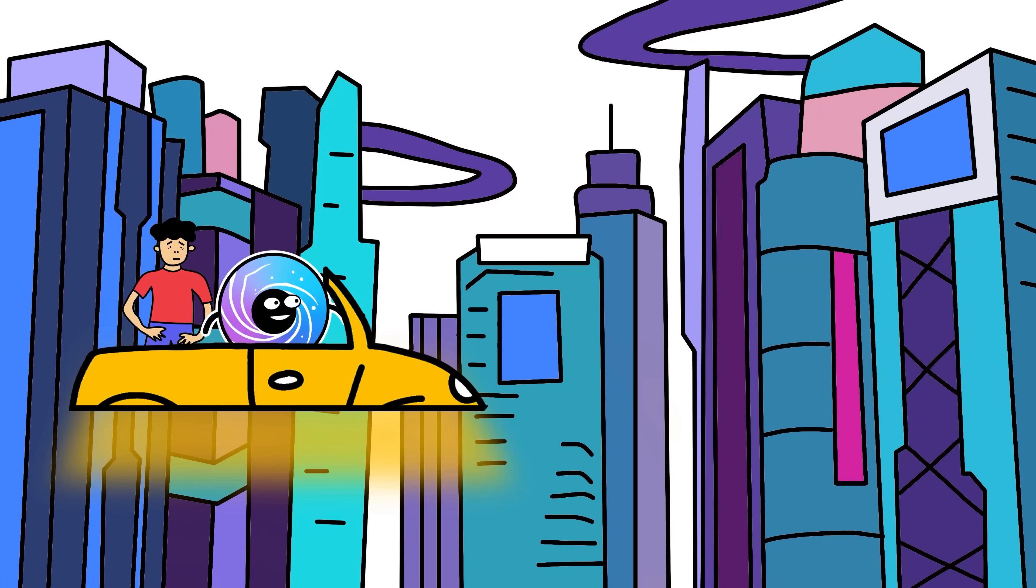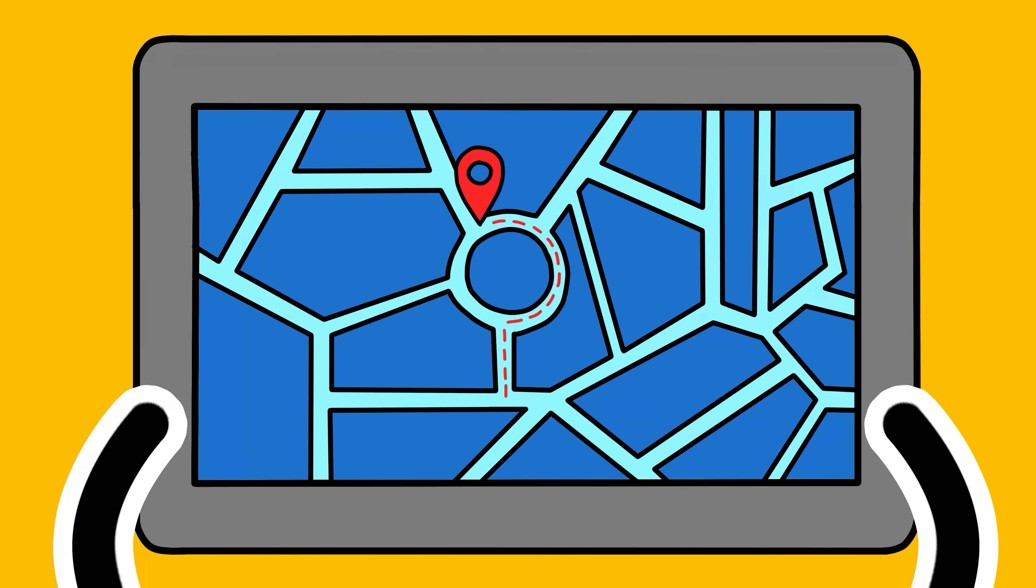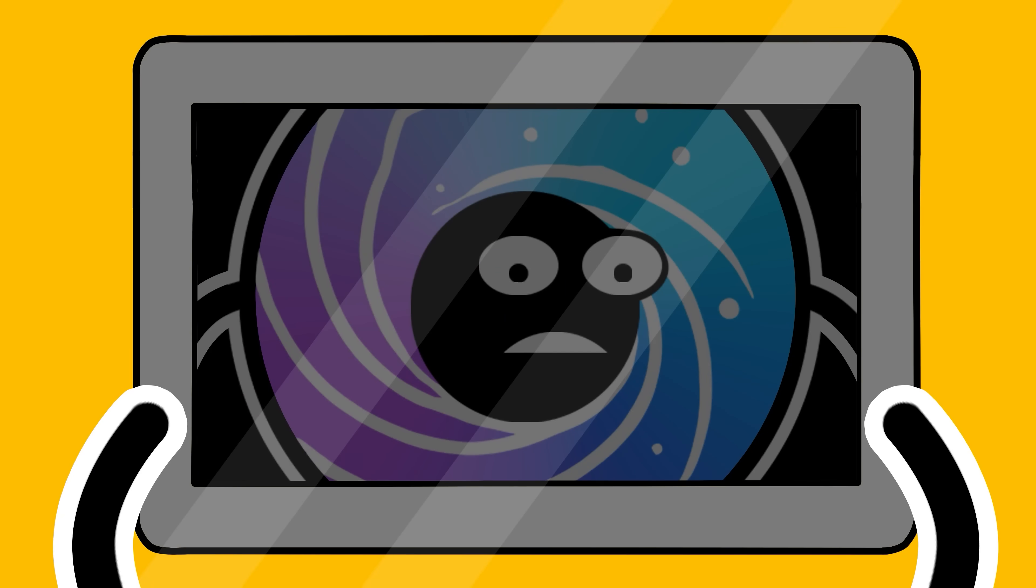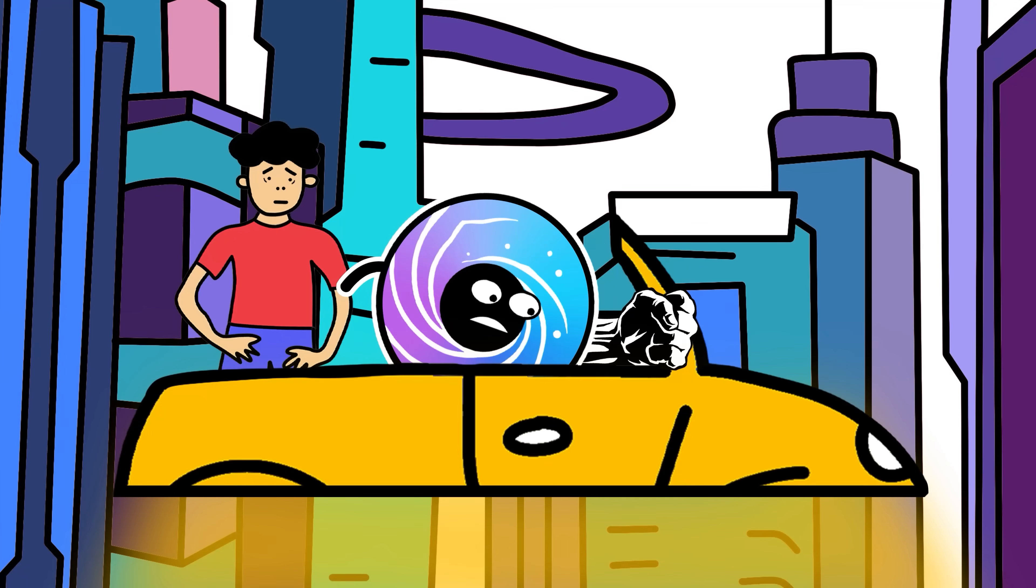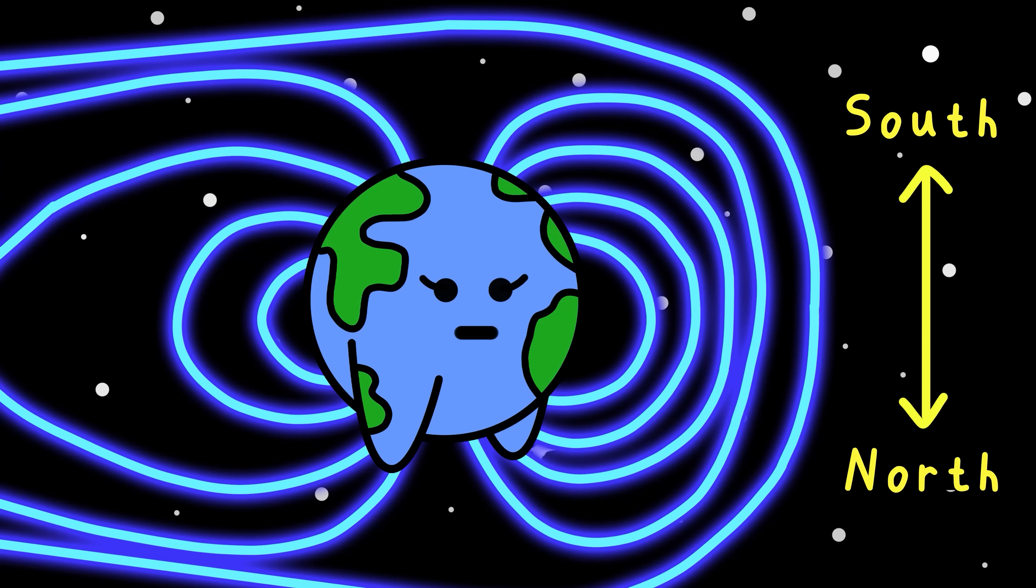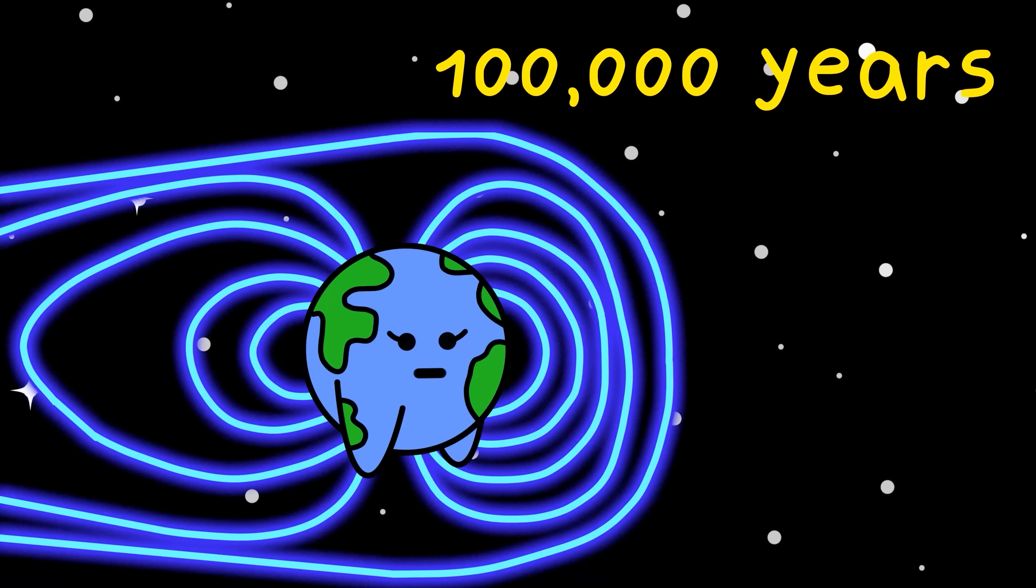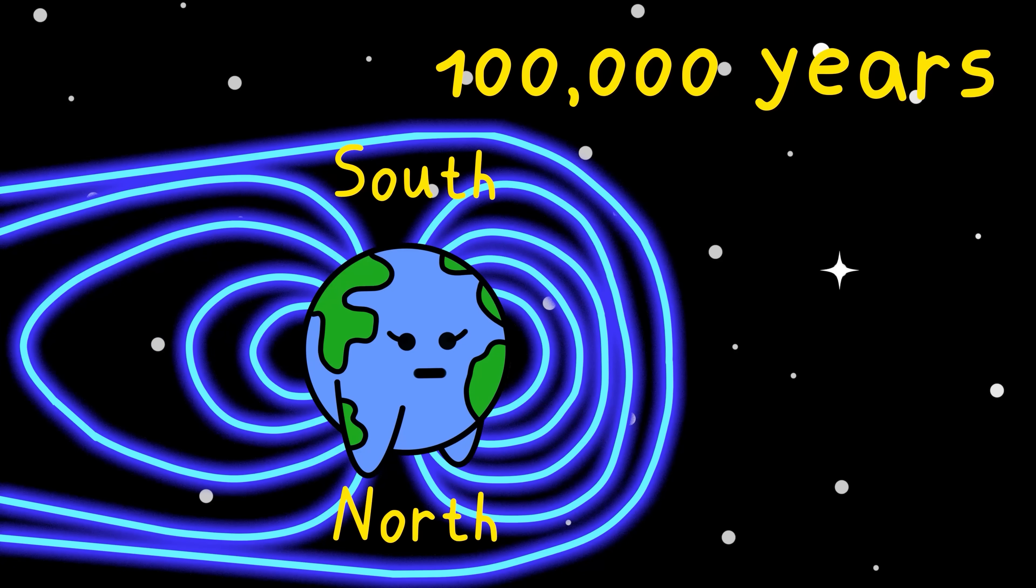Which reminds me, we need to travel 100,000 years into the future again. Yes, welcome to the far future, Kyle, where we have flying cars, AI girlfriends, and apparently still s*** navigation systems. Why is it not working? Oh, right. I forgot. Earth flipped its magnetic field. Yeah, every few hundred thousand years, north becomes south and south becomes north.